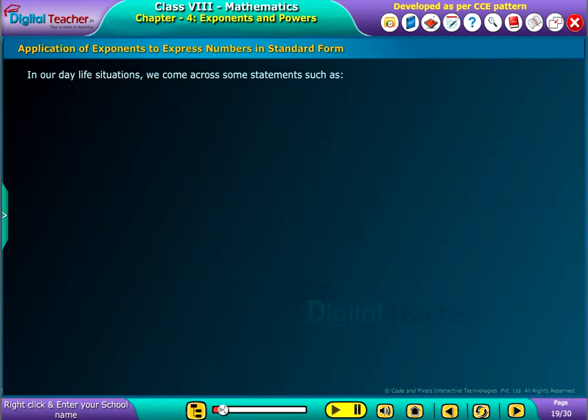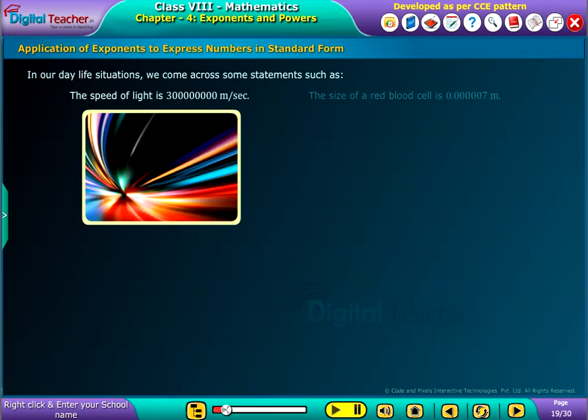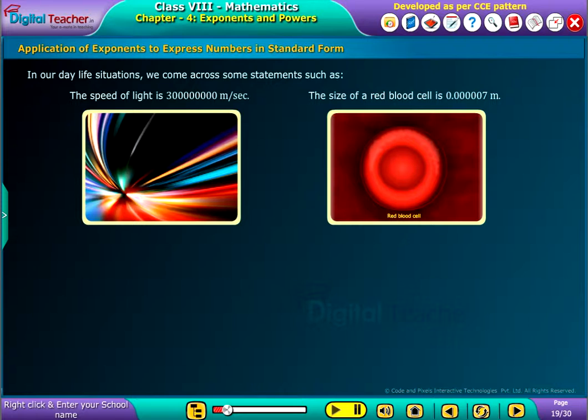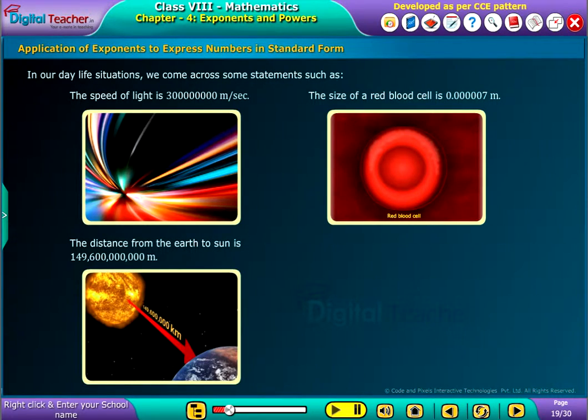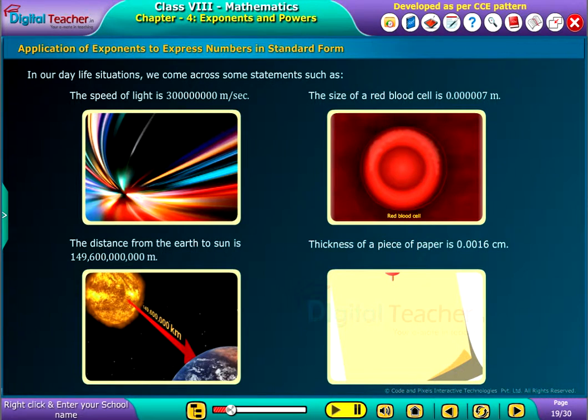In our daily life situations, we come across some statements such as the speed of light is, the size of a red blood cell is, the distance from the earth to sun is, thickness of a piece of paper is.